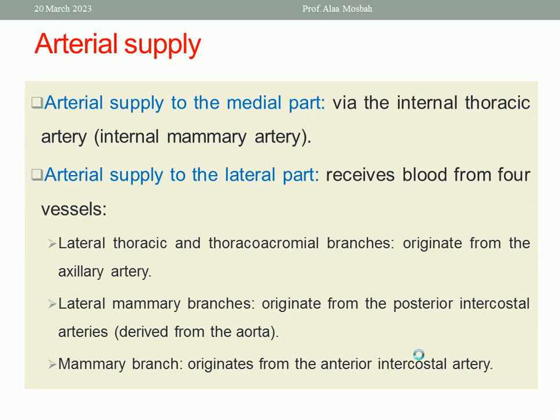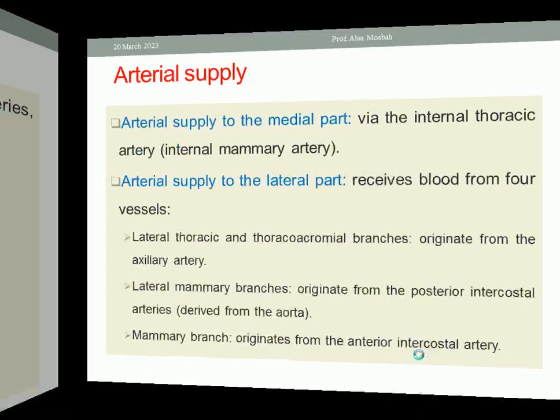The lateral part receives blood from four vessels. The axillary artery gives two branches: the lateral thoracic and the thoracoacromial branches. There are also two other vessels: a lateral mammary branch originating from the posterior intercostal arteries derived from the aorta, and a mammary branch originating from the anterior intercostal artery.